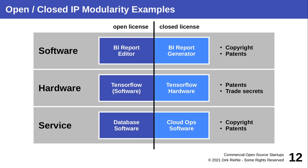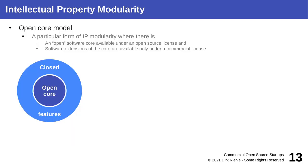The particular arrangement called the open core model is where the open-licensed module forms the core — the bare-bones software — and any additional features around it are closed, proprietary extensions of that open core. People recognized this model about 15 years ago, and companies rearranged themselves around it.